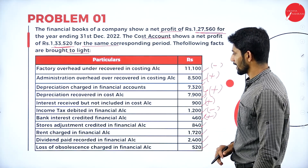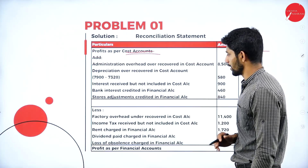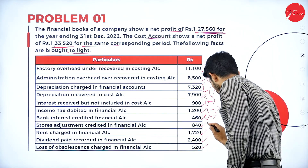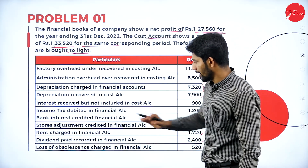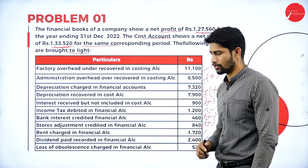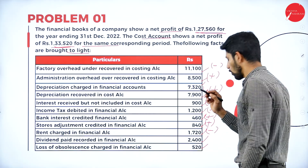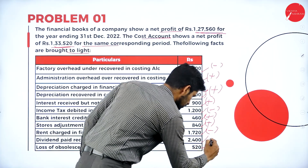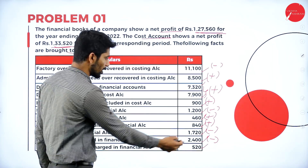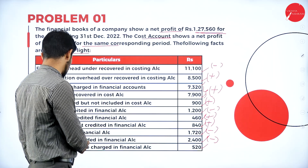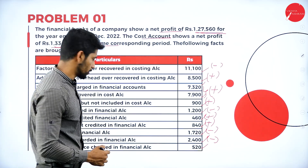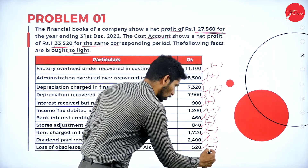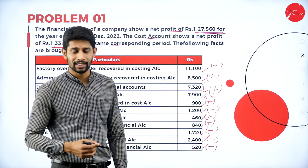Stores adjustment credited in financial account — credited means it is income, so if it is credited in the financial account we are supposed to add it to cost profit. Rent charged in financial account is an expenditure, so we are supposed to minus it from cost profit. Dividend paid recorded in financial account — the amount is going out, shown in the financial account but not in cost account, so we are deducting it from cost profit. Loss of obsolescence charged in financial account — the loss is shown in the financial account but not in cost account, so we are deducting it from cost profit.